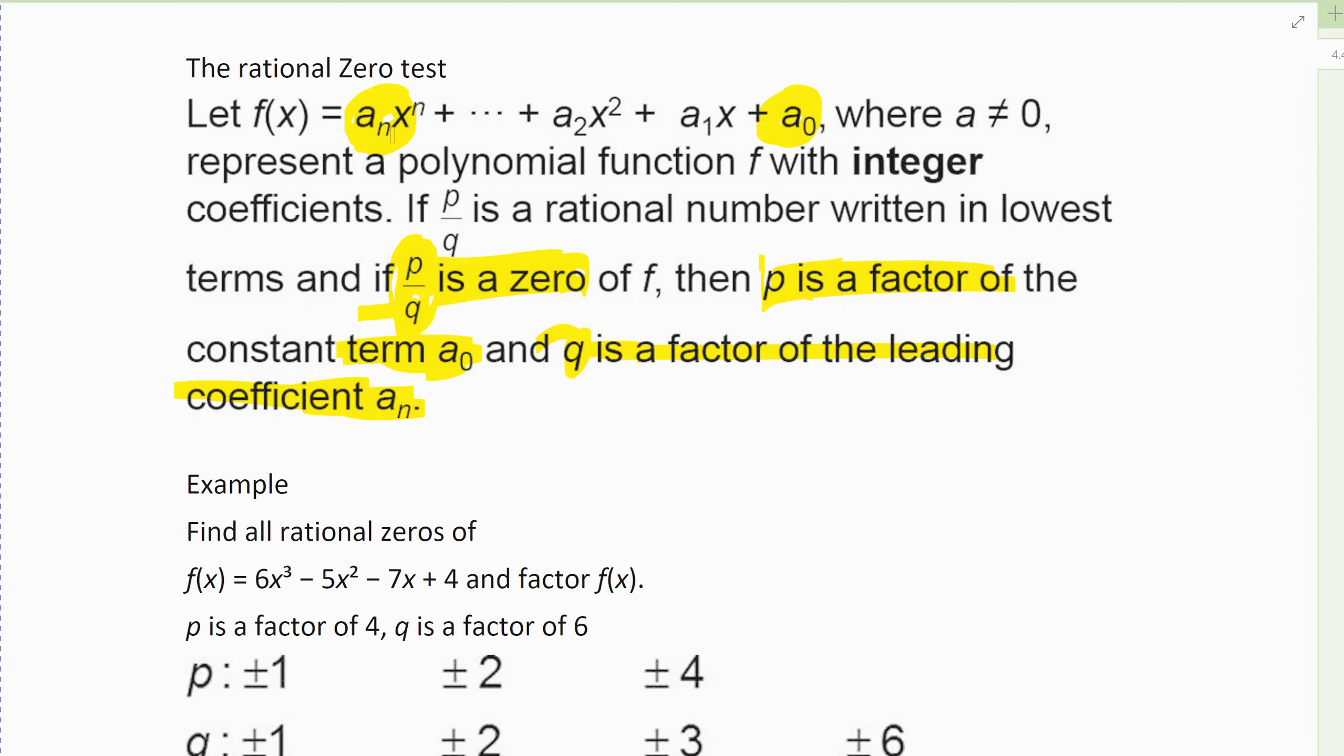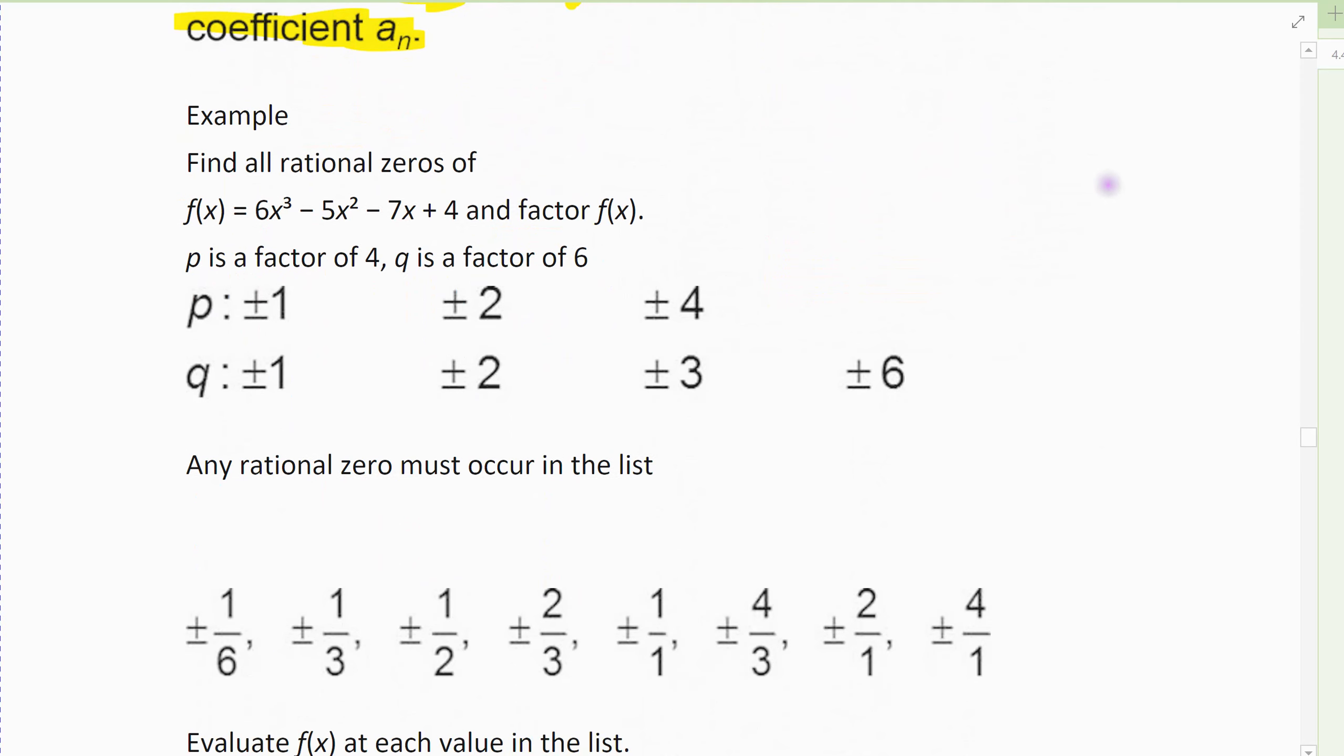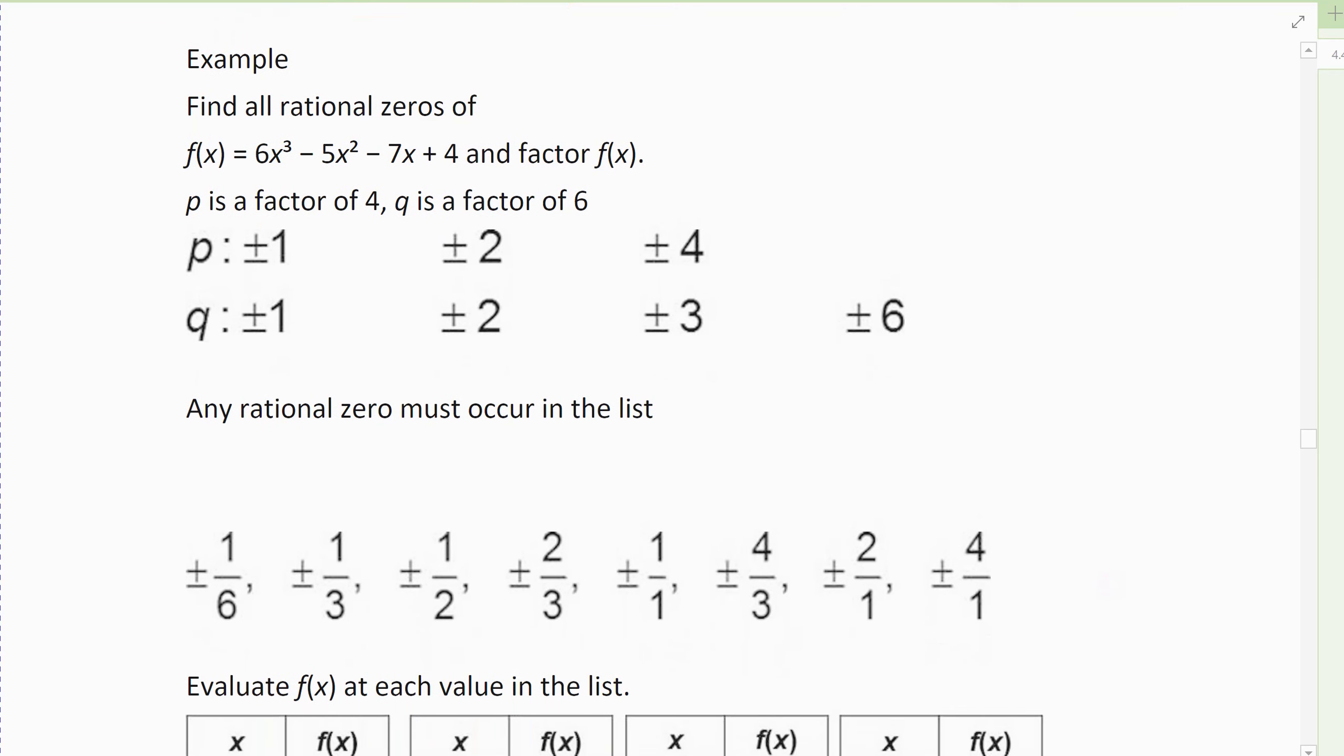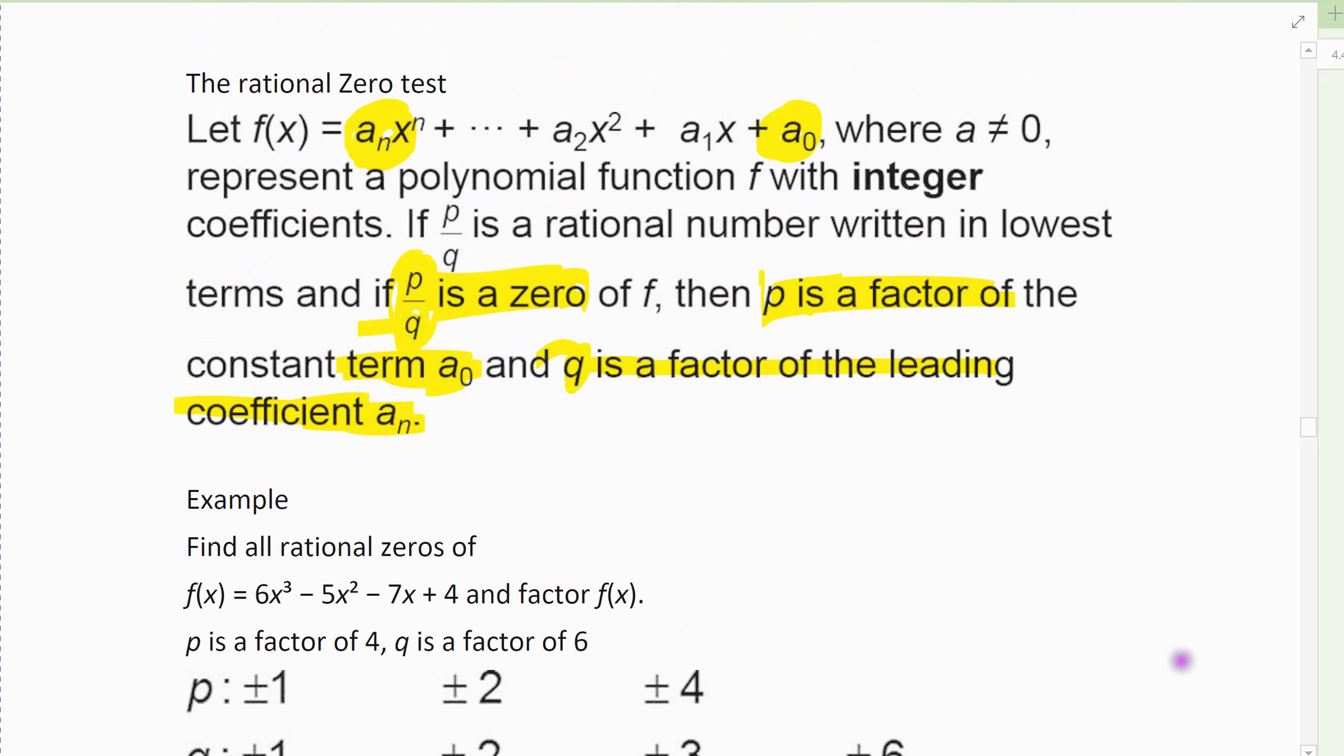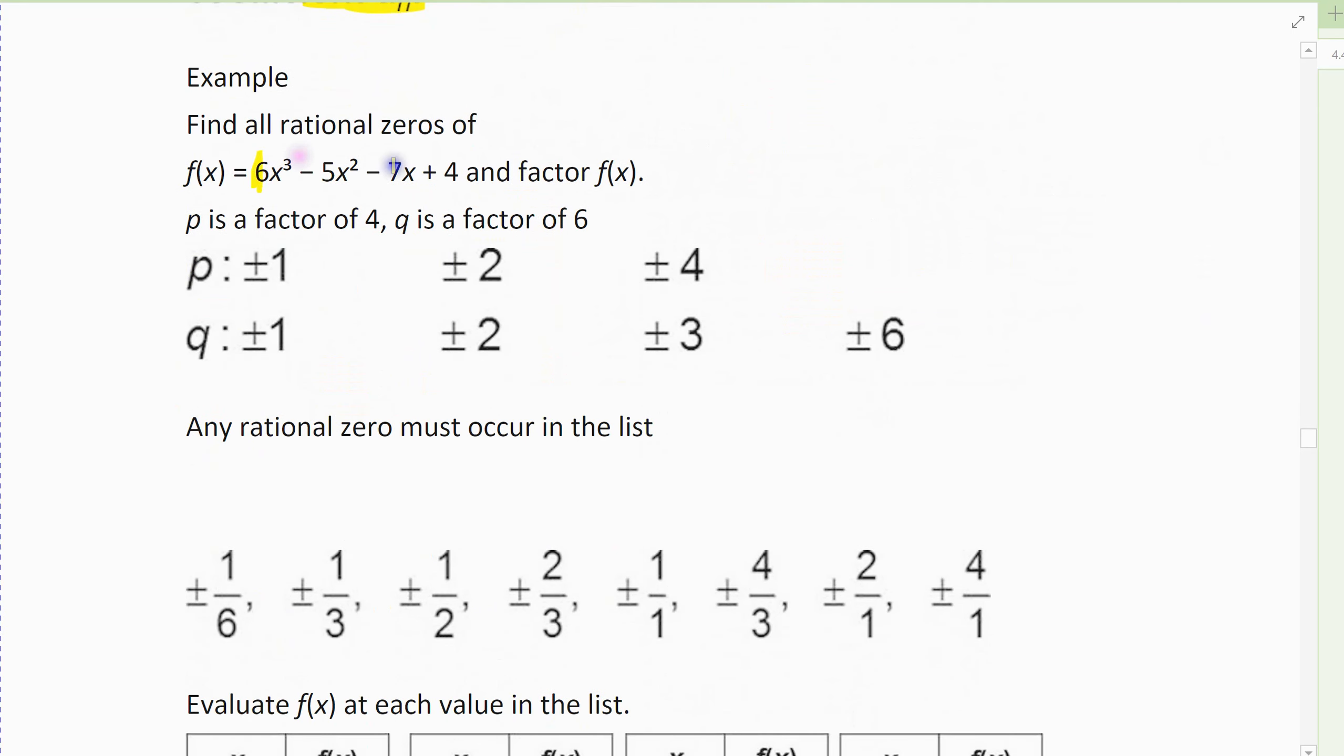And so we sort of use that in reverse to figure out what my zeros are. So I'm going to walk through an example of using this. It's just easier, I think, to walk through an example. Suppose I want to find the rational zeros, the real number zeros of 6x³ - 5x² - 7x + 4. Without graphing it, I'm doing this using a table. And so what that previous rule basically says is I look at the leading coefficient and the constant. And so I look at the 6 and the 4. I need to find factors of the 4 and pair it with factors of the 6.